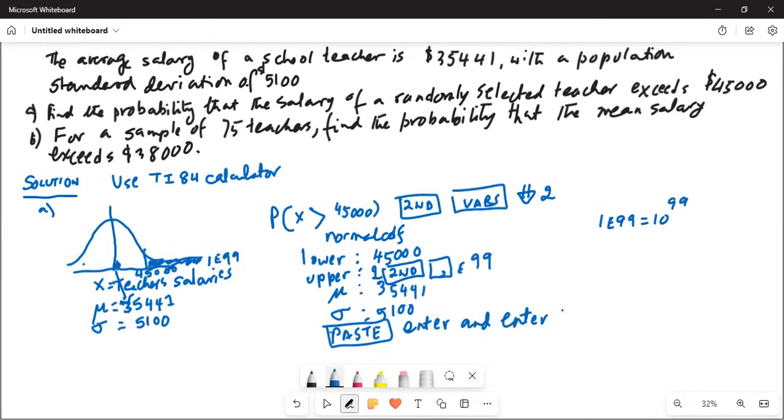My lower boundary is from where I'm starting - I'm starting from $45,000. My upper boundary is a very large number on the right, which is 1E99. E stands for exponent of 10 to the power of 99. So first I type 1 for the upper, and then I press the second button, then the comma button which is on top of the 7 button. This will give me the small capital E, and then I type in number 99.